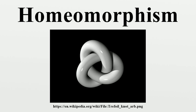Definition. A function f: X → Y between two topological spaces is called a homeomorphism if it has the following properties: f is a bijection, f is continuous, and the inverse function f⁻¹ is continuous. A function with these three properties is sometimes called bicontinuous. If such a function exists, we say X and Y are homeomorphic.